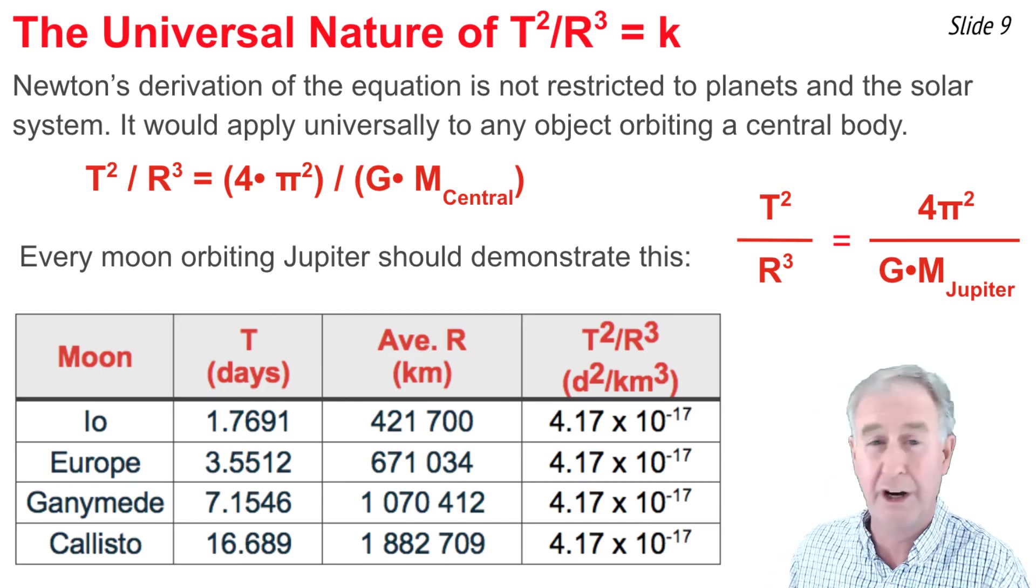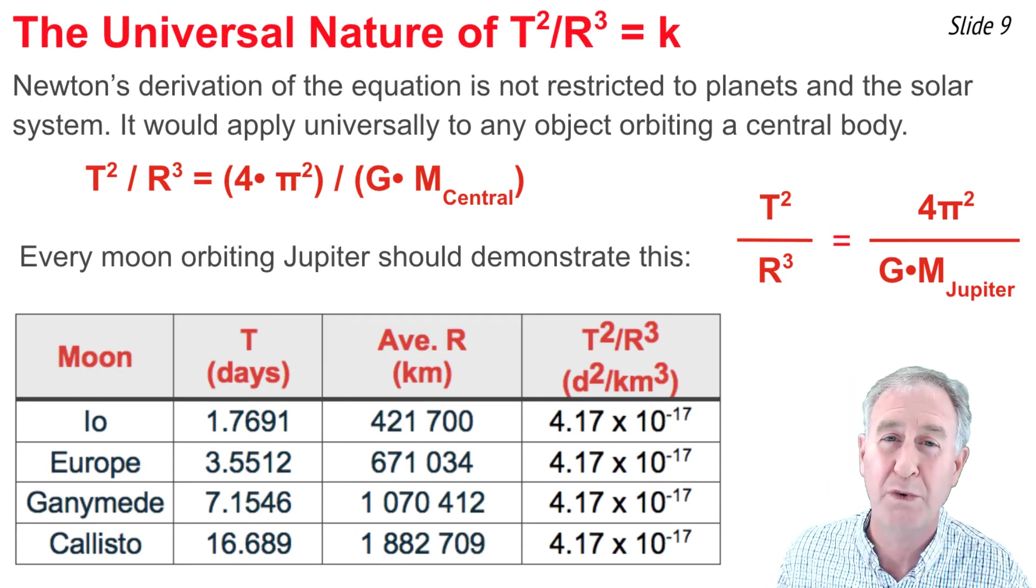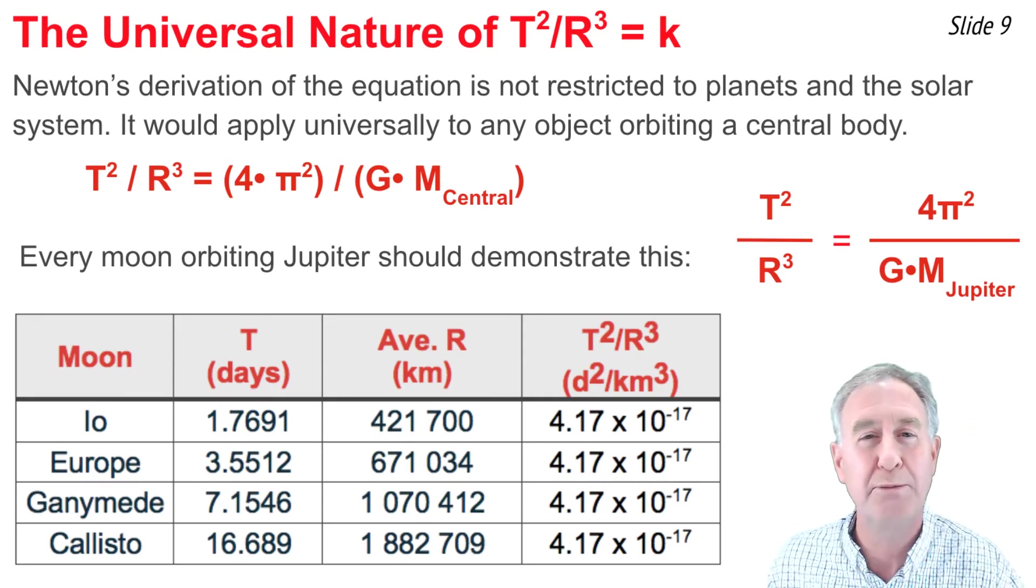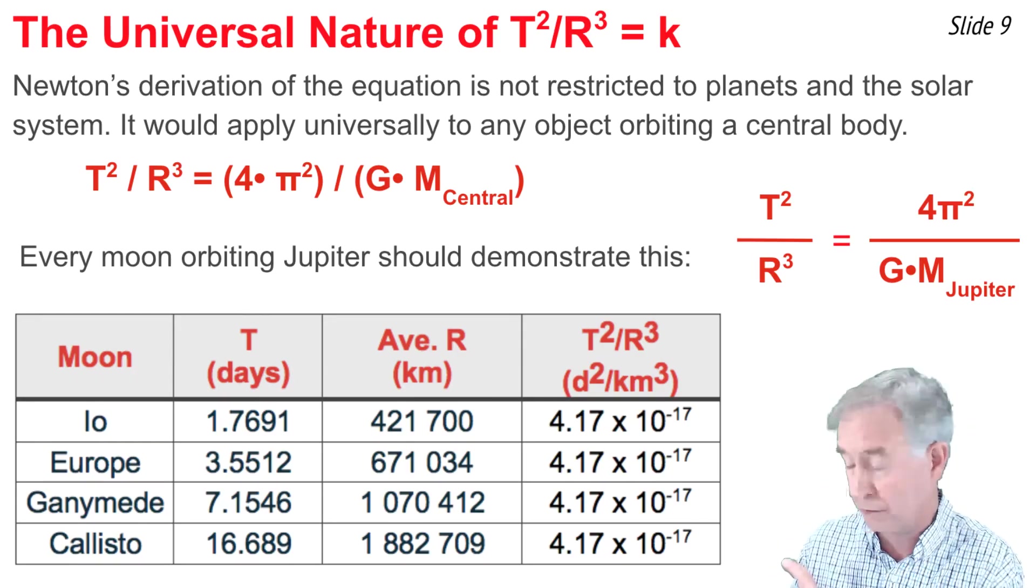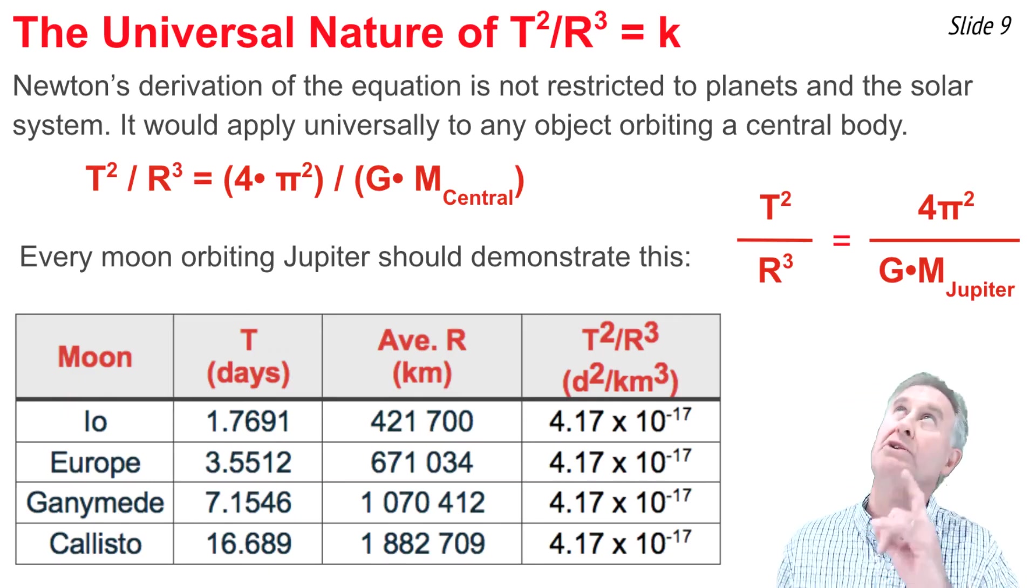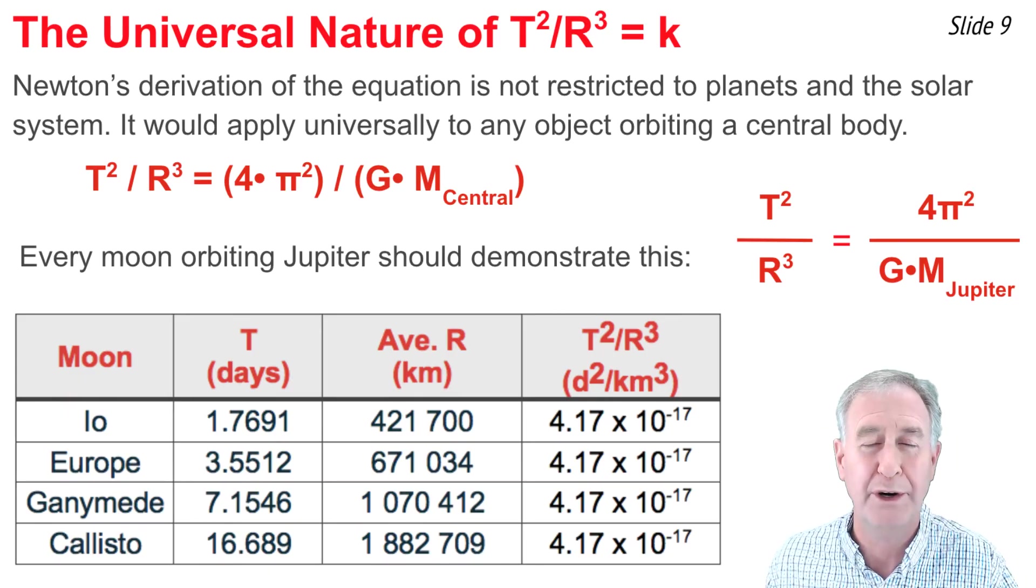You'll note that that T² / R³ ratio is the same for these four selected moons of Jupiter. And we should note that we could take these values for T² / R³ and use it in the above equation to determine the mass of Jupiter,